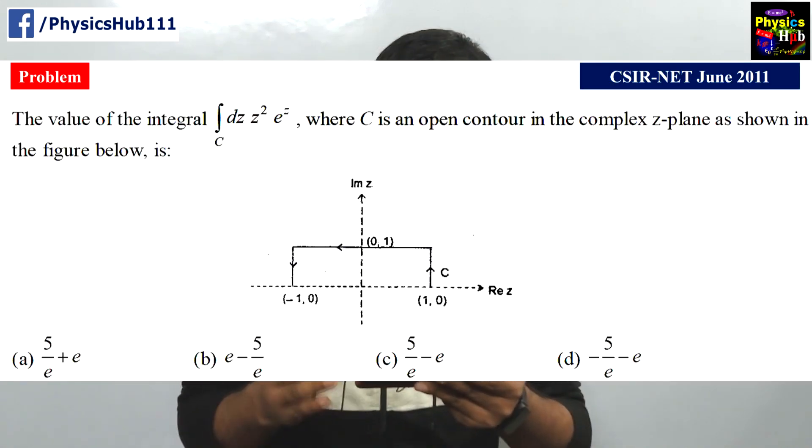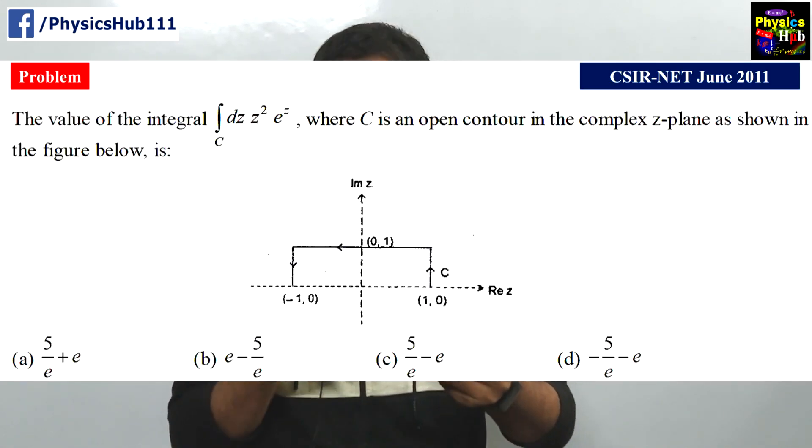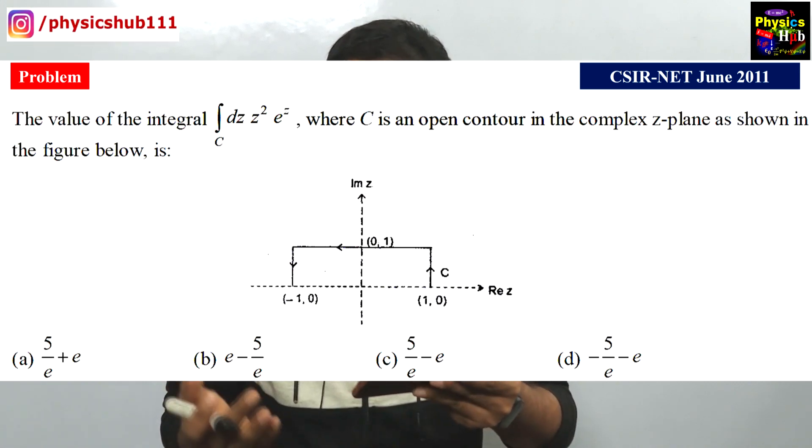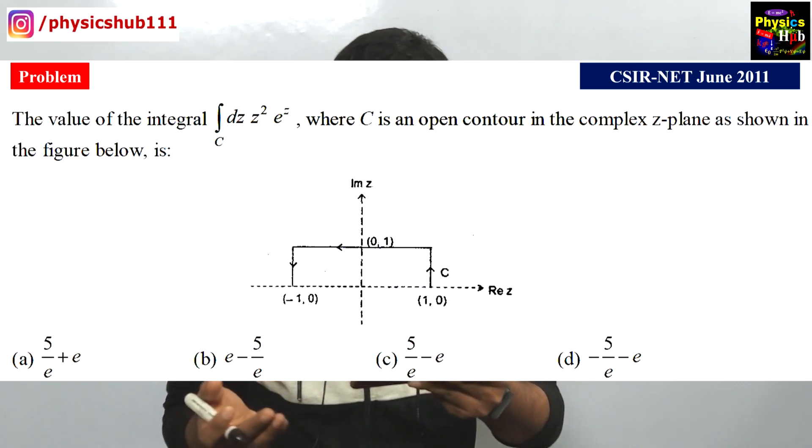Let me read the question. This question is from complex analysis. The question reads like this: the value of the integral over some contour C, dz z² e^(z²), where C is an open contour in the complex z-plane as shown in the figure below.